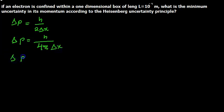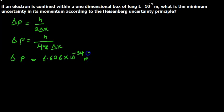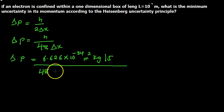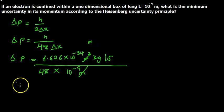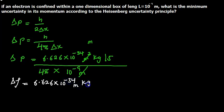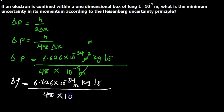In this case, dp equals h — which is Planck's constant, 6.626 × 10⁻³⁴ meter squared kilogram per second — divided by 4π times dx, which is the length. The length is 10⁻⁹ meters. The meter squared in the numerator cancels with one meter from the denominator, leaving kilogram meter per second. So dp equals 6.626 × 10⁻³⁴ divided by 4π × 10⁻⁹.